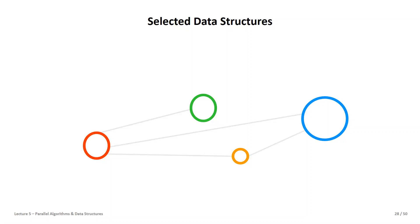Welcome back to the second part of Lecture 5, Parallel Algorithms and Data Structures. In the first part of today's lecture, we reviewed the general idea of a parallel algorithm and went beyond simple collectives, seeing that collectives are very useful for simple application problems such as vector addition or matrix-vector multiplication, where just a couple of MPI collectives make our life very easy.